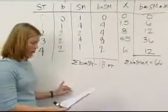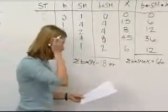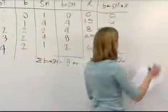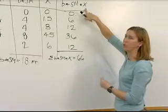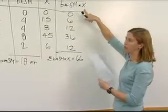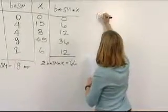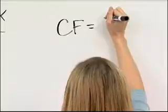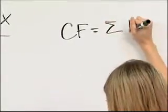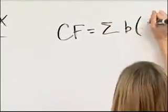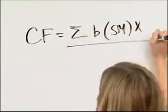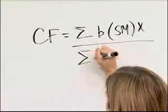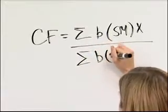Once we have this, we can calculate the LCF, I mean, the center of flotation. Well, it is longitudinally, because we're looking at the longitudinal lever arm. So CF will equal summation of B times Sn times X, divided by the summation of B times Sn.